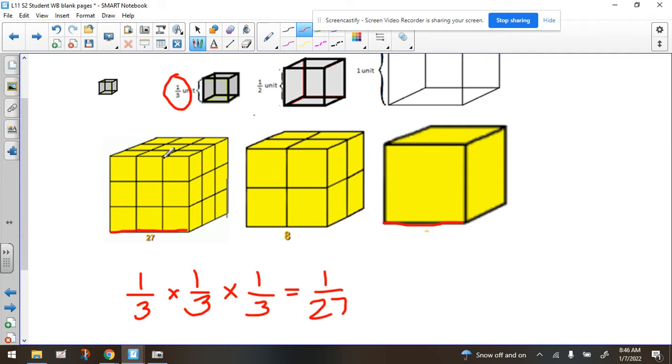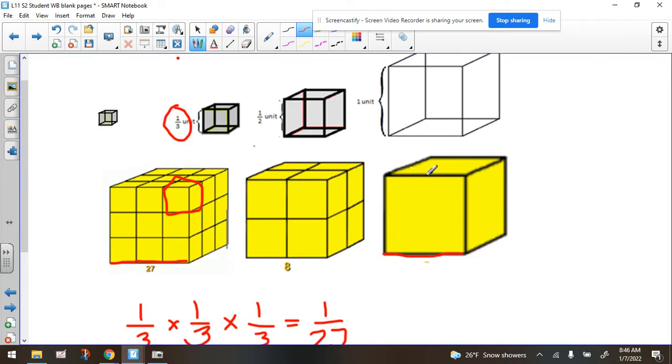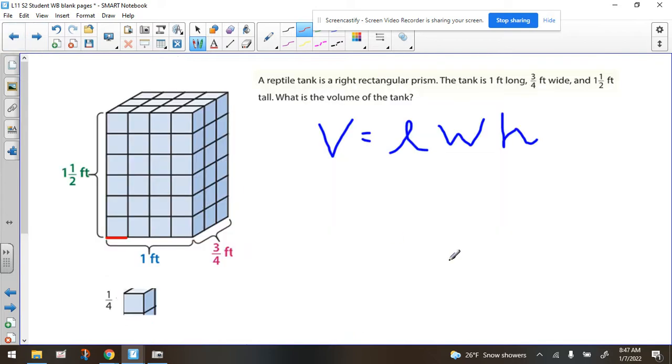So what does that mean? That means that one of these cubes right here is one-twenty-seventh the volume of a full cube. You need 27 of them to make up the full cube. Now, what does that have to do with some of the word problems that you're going to see? So let's take a look at this word problem right here.